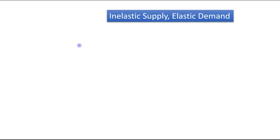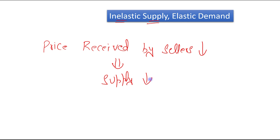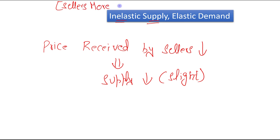Now let's come to case 2: inelastic supply. Inelastic supply means when a good is taxed, price received by the sellers decreases. When the price received by sellers decreases, supply is going to be reduced. But in this case, supply will decrease by only a slight amount — because the sellers are not having good alternatives to produce that particular good. They will be less willing to leave the market when a good is taxed, and when they remain in that market, they will bear more of the burden of the tax. So in this case, sellers will bear more burden of the tax.